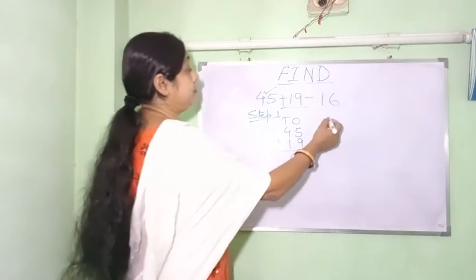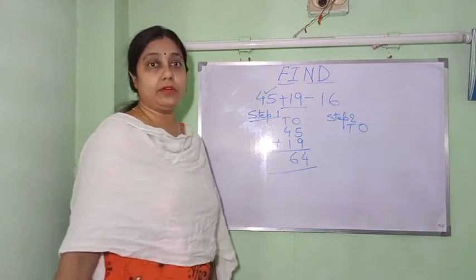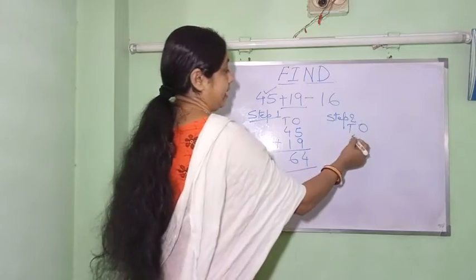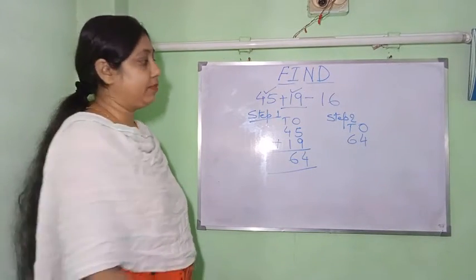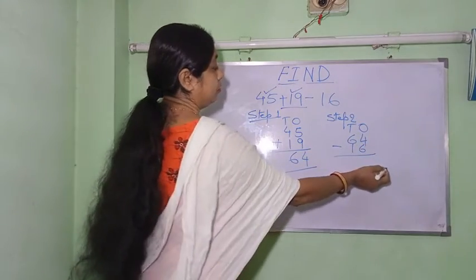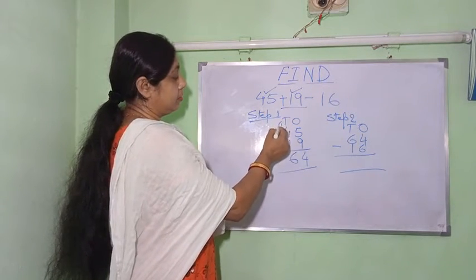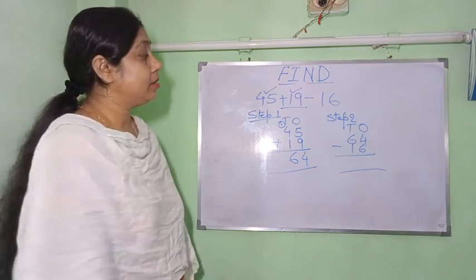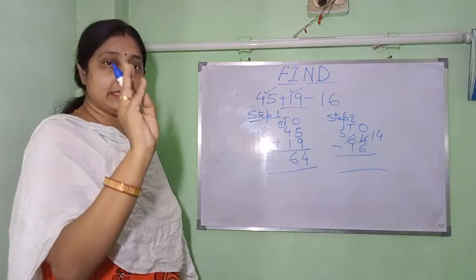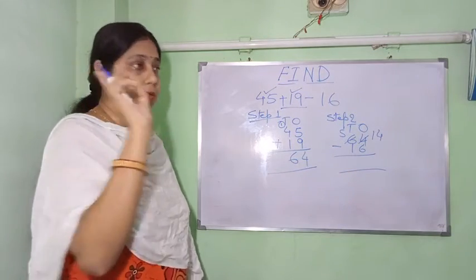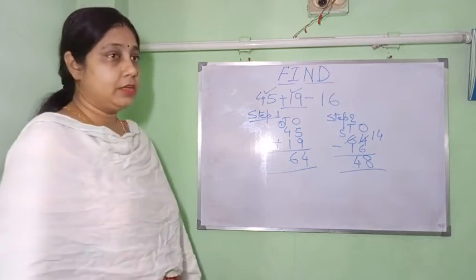Step 2: carry forward 64, then bring down minus 16. Now 4 is smaller than 6, so we borrow. Count from 6 to 14: 7, 8, 9, 10, 11, 12, 13, 14 — that is 8. Then 5 minus 1 is 4. The answer is 48. So in the same sum we have done carrying and also borrowing.